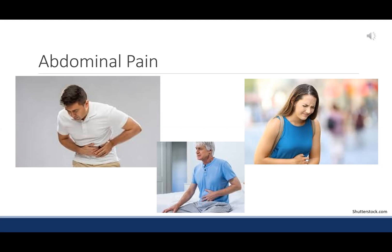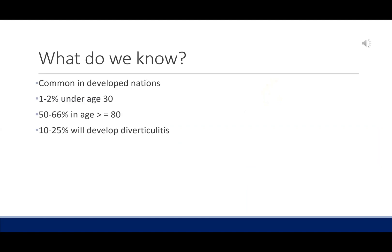What do we know about diverticular disease? We tell people that diverticulosis needs to be present for diverticulitis to occur. It is common in developed nations. Its prevalence is 1-2% under age 30, and that prevalence goes up with age — 50-66% as you get older. We also say that 10-25% of those with diverticulosis will develop diverticulitis.